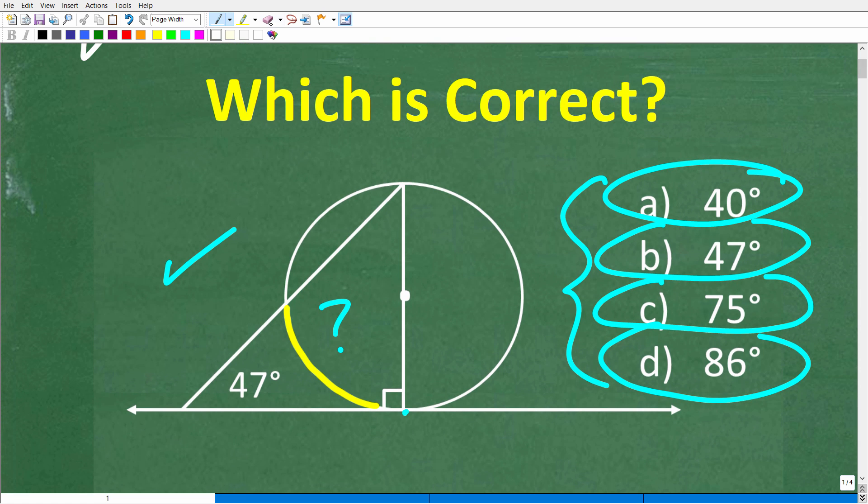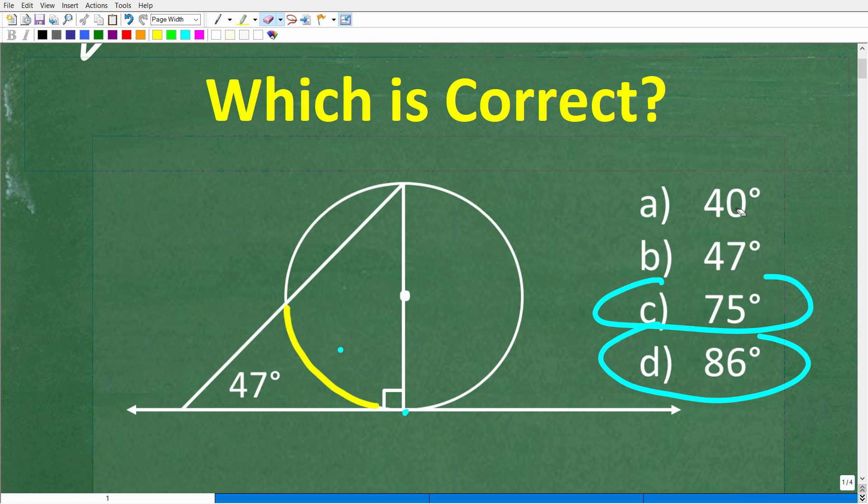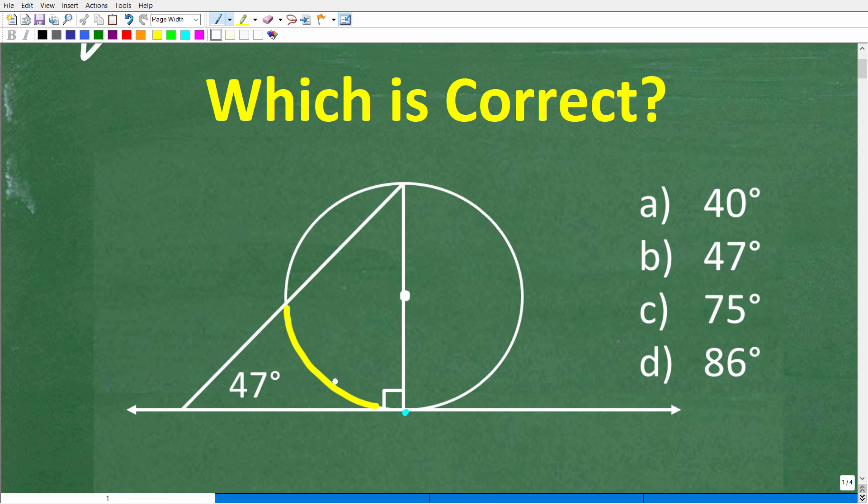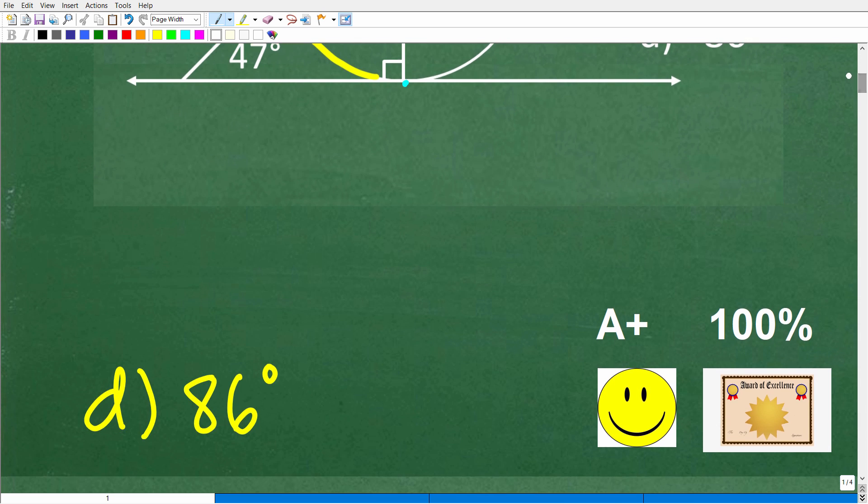All right, so I kind of fully explained this problem. Hopefully I did. But here is the situation again. This is an arc, right? So this is measured in degrees. What is the measure of this arc, given all this information? Let's take a look at the right answer. The correct answer is D, 86 degrees.